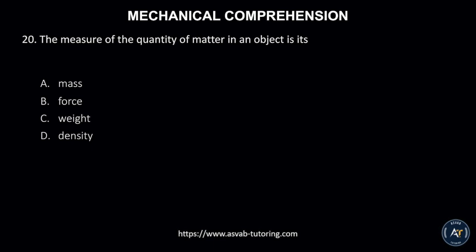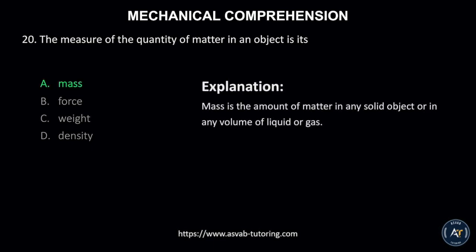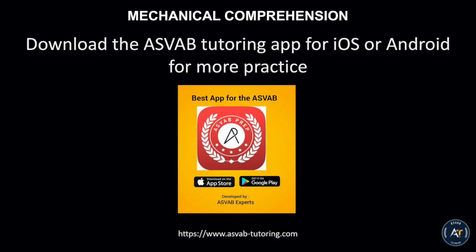Number 20. The measure of the quantity of matter in an object is its? A. Mass, B. Force, C. Weight, or D. Density. The correct answer is A. Mass. This is because mass is the amount of matter in any solid object or in any volume of liquid or gas. Download the ASVAB tutoring app for iOS or Android for more practice.